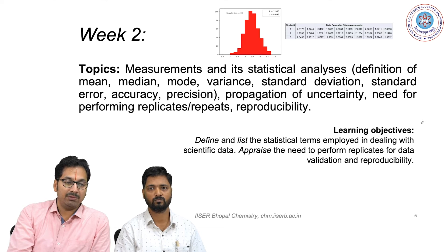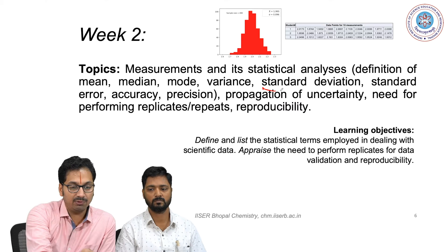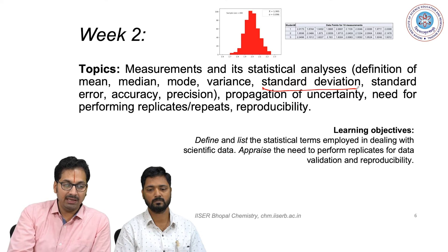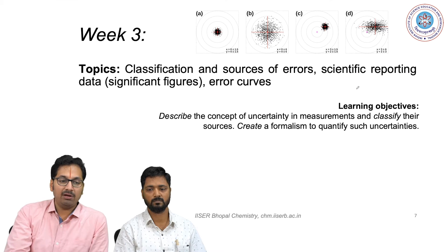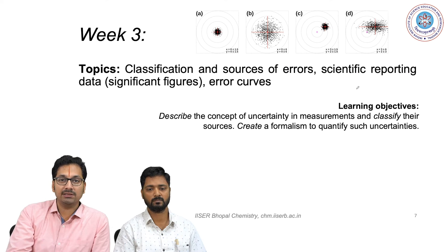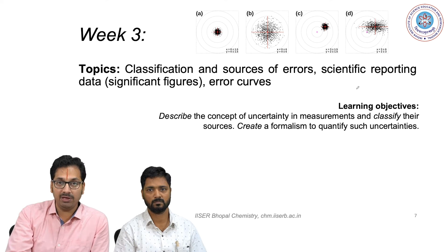In the second week we will try to understand what measurement is and what are the uncertainties that come up with measurement, as we would quantify it with a variable called standard deviation, and how experiments could be set up reliably such that the data you get can be interpreted. Following this, in the third week we will be trying to understand how these uncertainties arise for different setups and how some of them can be minimized.